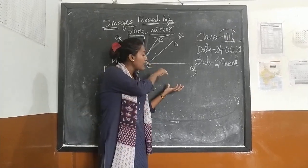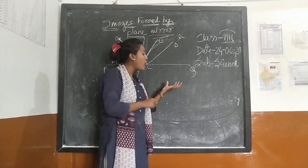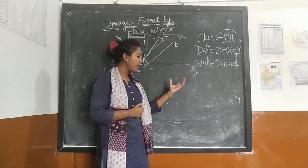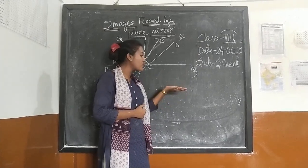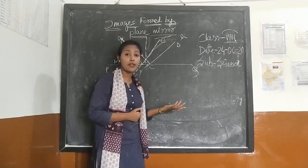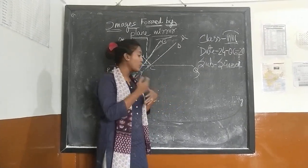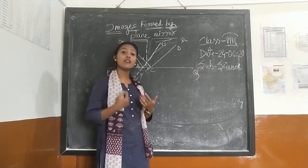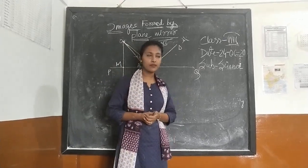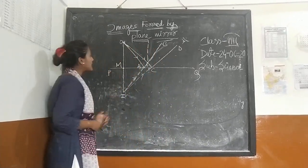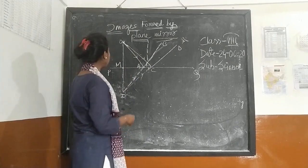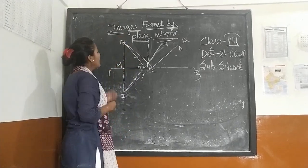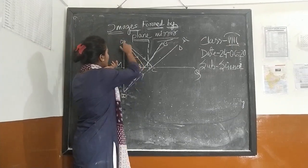The same image is formed on the mirror. Why does the size of the object and image become the same and equal? What is the reason? Look at the diagram carefully. Here is the candle, and from the candle the light is coming.